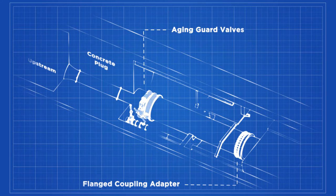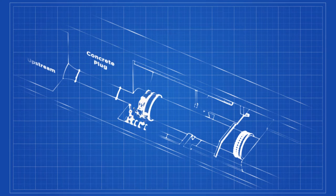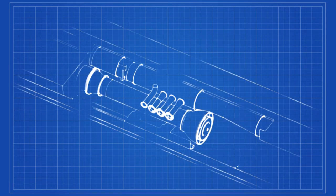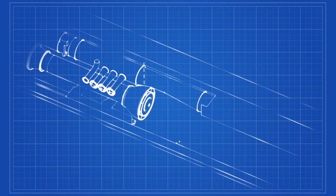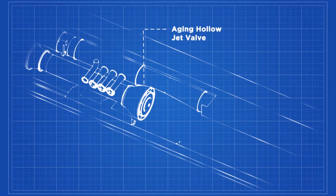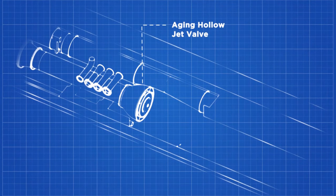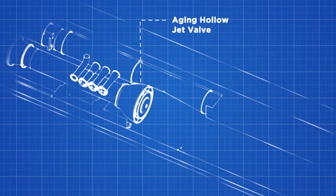These valves were installed during the construction of the dam around 1950 and were designed to last 50 years. Approaching 70 years of service, the valves had deteriorated and were leaking heavily. Downstream of the 72-inch guard valve connects to a hollow jet valve, which dissipates energy and controls the water flow rate through the tunnel. This hollow jet valve was also installed in the 1950s and also leaked heavily.